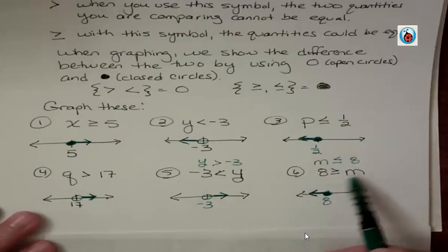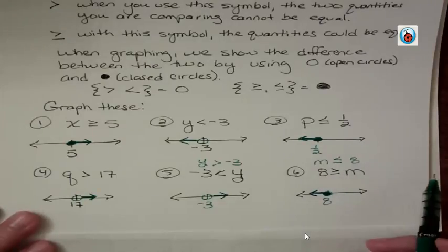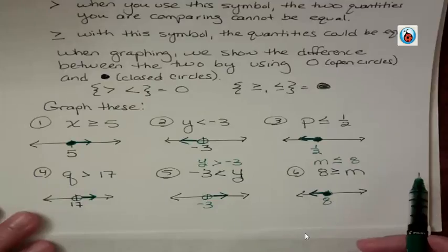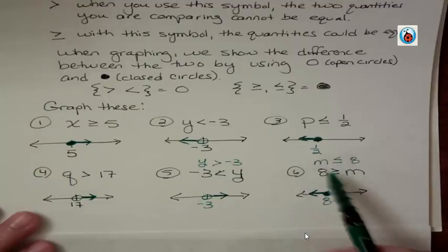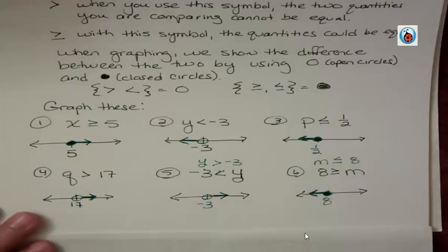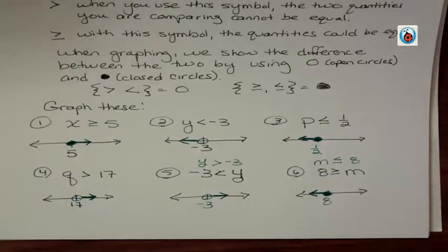And remember, if it's on the right, the arrow points in the opposite direction of how you want to shade. So what I might suggest is that you make all your inequalities have your letter on the left side, and it makes it easier to graph. All right, we'll see you next time. Have a fantastic day.